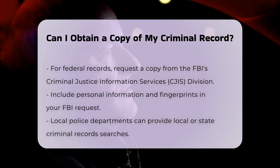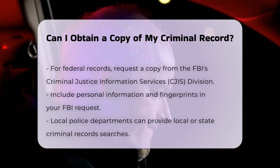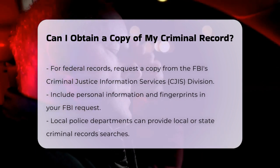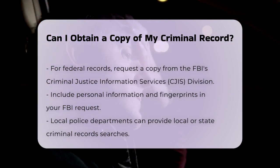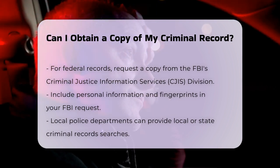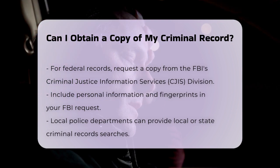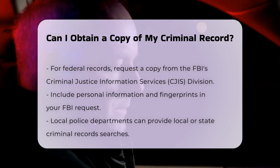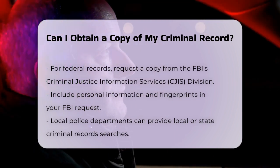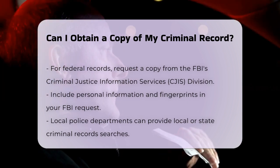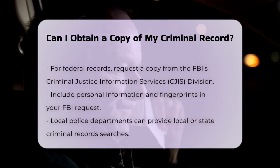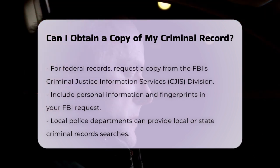Regarding fees and processing time, the fees for obtaining a criminal record vary. In New York State, there is no specific fee mentioned for the DCJS process, but for fingerprinting services, you will need to pay the service provider. In California, the processing fee is $25. For an FBI records check, you will need to cover the cost of fingerprinting, which can vary depending on the service provider.